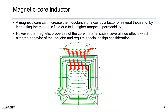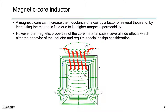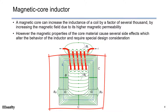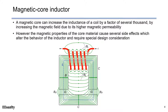The magnetic core inductor is the most commonly used type of inductor in power applications. We have a winding with a current flowing through it to generate a magnetic field. By adding a piece of ferromagnetic or ferrimagnetic material in the center of the coil, we can increase the magnetic field by hundreds or thousands of times, thanks to the higher magnetic permeability of the core. This is called a magnetic core.